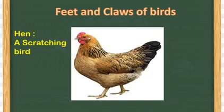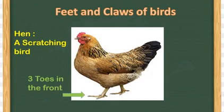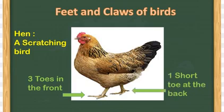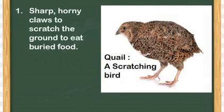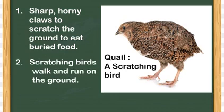The next type is the scratching bird. Hen is one example. These scratching birds have 3 toes in the front and 1 short toe at the back. Birds like the quail have sharp horny claws to scratch the ground and eat buried food. Scratching birds also walk and run on the ground.